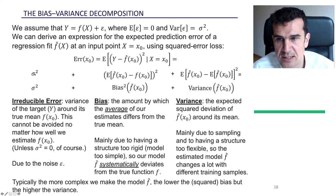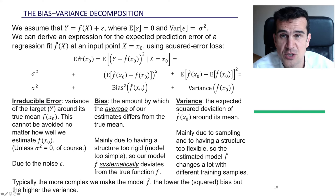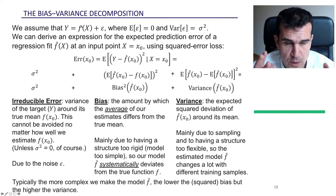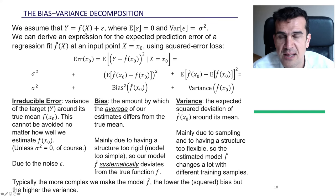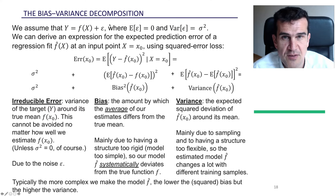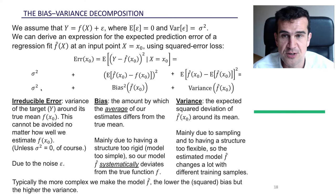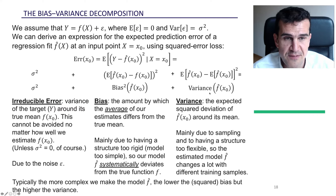The first component is sigma squared, called the irreducible error. The best prediction we could give is f of x. If we predicted with f of x — which we don't know — the expected quadratic error would be precisely sigma squared, because that's the variance of the random component we cannot predict. That's why we call this the irreducible error. We have it due to the noise epsilon, and there's no way to have a prediction error lower than this. Then we have the two remaining components: the bias and the variance.